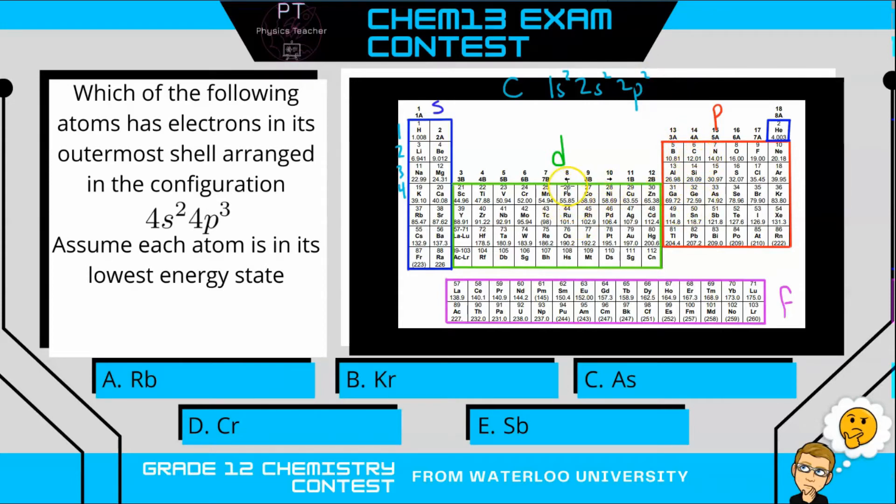Similar if you went all the way down here to iron. If you were to do iron, you'd have 1S2, 2S2, 2P6. So let's write this: 2P6, and then you'd have 3S2, and 3P6, and 4S2.